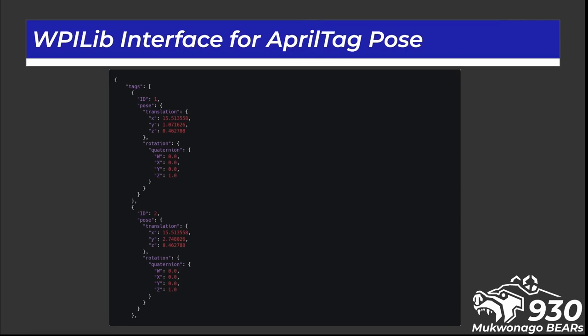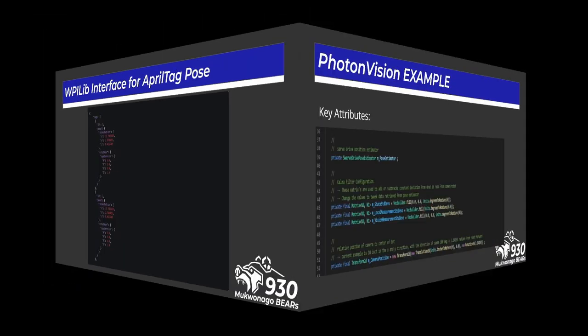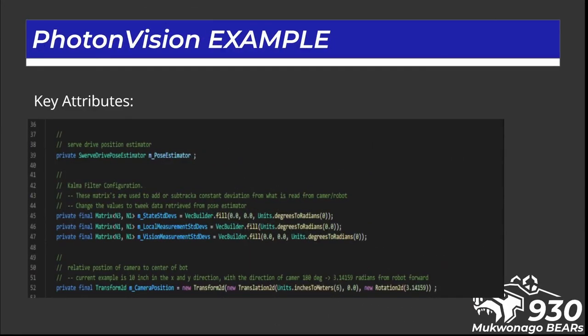In PhotonVision code: first, you determine the encoder position from the drivetrain; then, you determine the odometry of the robot to determine its position on the field; finally, you determine the position of the robot using the vision system. Positions are logged to an array that can be used as a coordinate system. The visual position can then be used to establish the actual position of the robot and remove much, if not all, of the error resulting from estimating position using odometry and encoder positions alone.